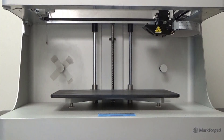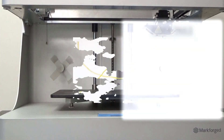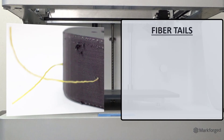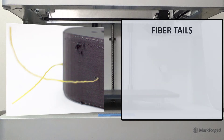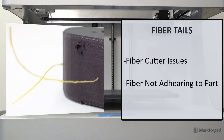We will now talk about fiber issues. What if we are experiencing fiber tails? Fiber tails or strings can occur anytime fiber does not cut or lay down properly in a part. This is commonly present as short segments of fiber stringing off the side of your part. Some common causes for this issue would be an issue with the fiber cutter itself, or fiber not adhering properly to your part.